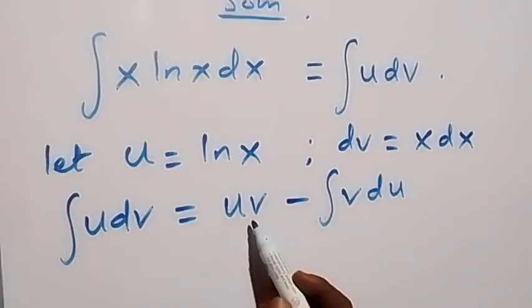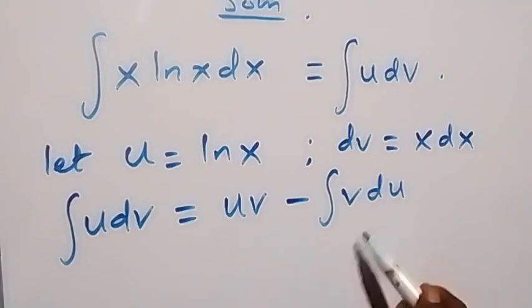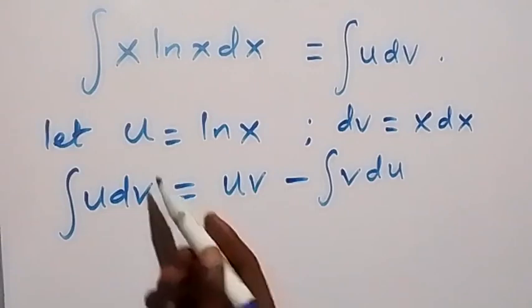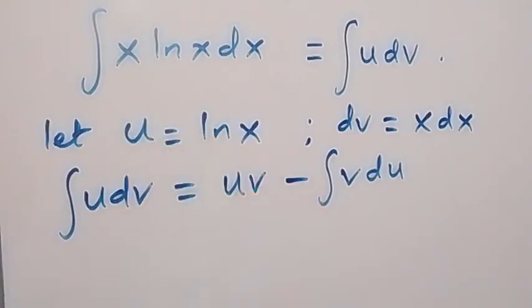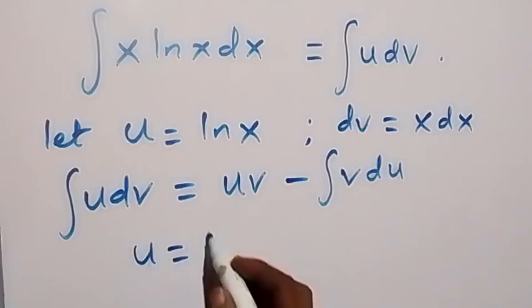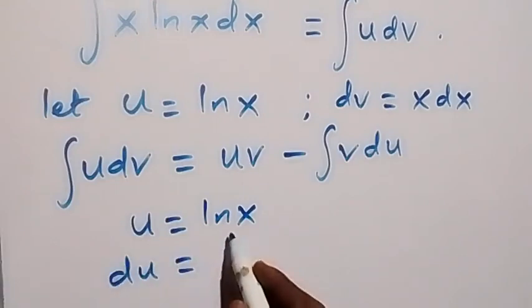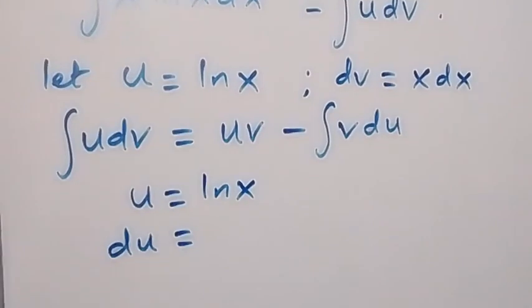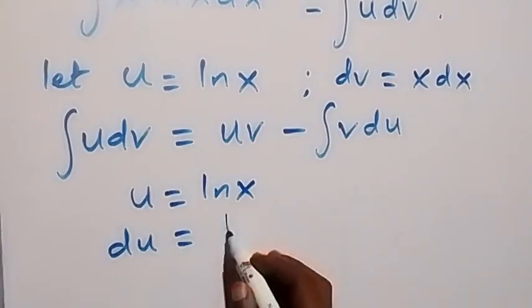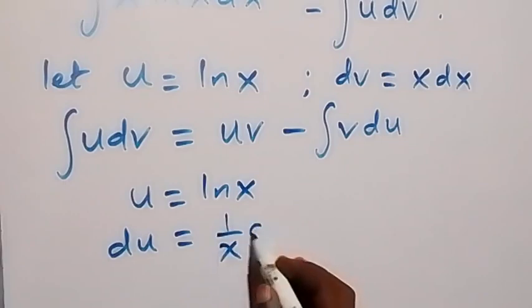Now here it implies that we need to find v. Also we need to find du. Then from here we can find du. That is from u equals to ln x. The derivative of ln x here is 1 over x. So that will give us du equals 1 over x dx.